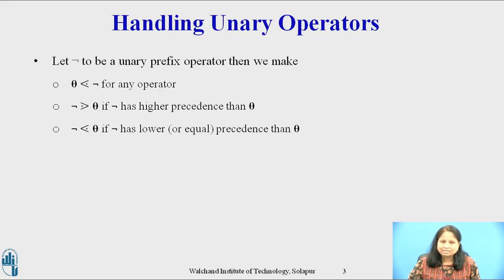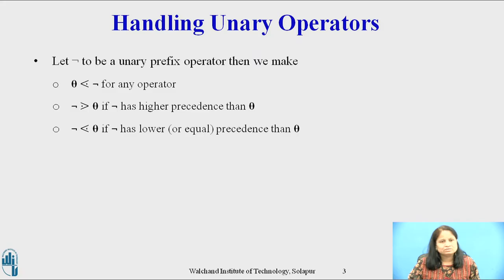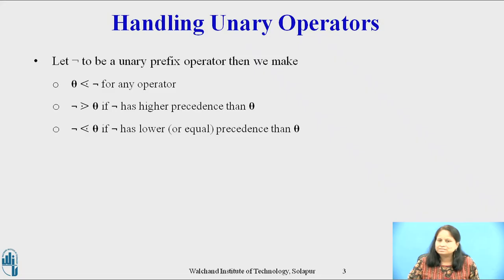Let logical negation be a unary prefix operator, which is not binary. Then, with the help of the operator precedence relation, we make theta yield precedence to logical negation for any operator theta, whether it is unary or binary. Logical negation takes precedence over theta if logical negation has higher precedence than theta. Logical negation yields precedence to theta if logical negation has lower precedence than theta.